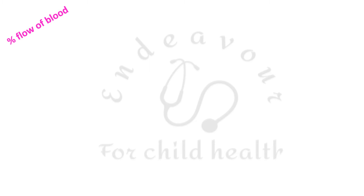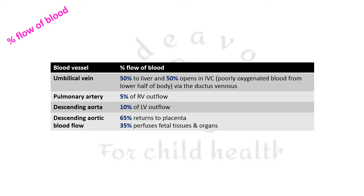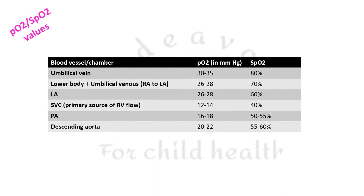Important percentages to remember: blood from the umbilical vein is carried 50% to the liver and 50% opens into the inferior vena cava via the ductus venosus. The inferior vena cava carries poorly oxygenated blood from the lower half of the body. The pulmonary artery constitutes 5% of the right ventricular outflow in fetal life. The descending aorta constitutes 10% of the left ventricular outflow. Of the descending aortic blood flow, 65% is returned to the placenta and 35% perfuses the fetal tissues and organs.